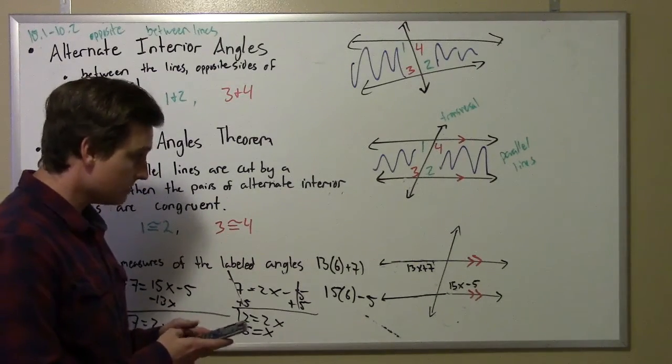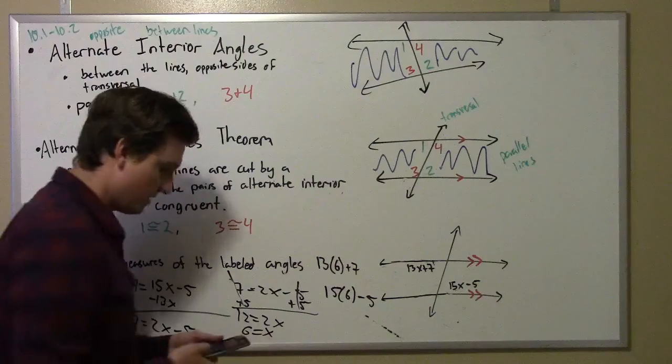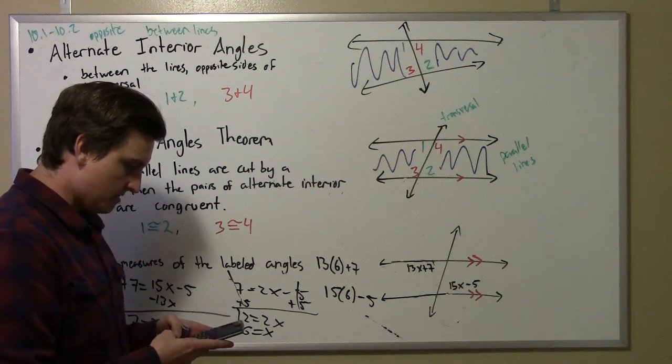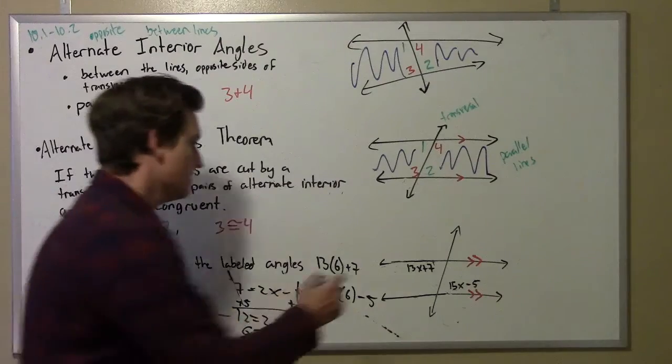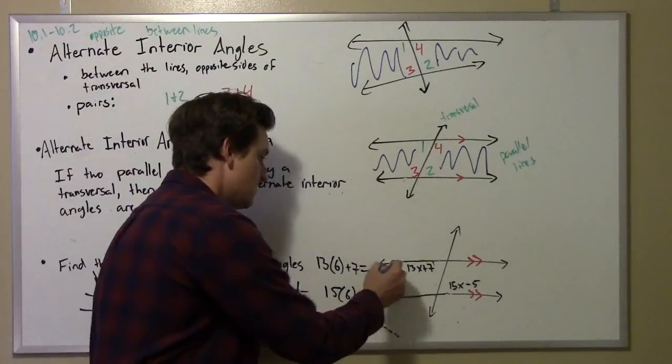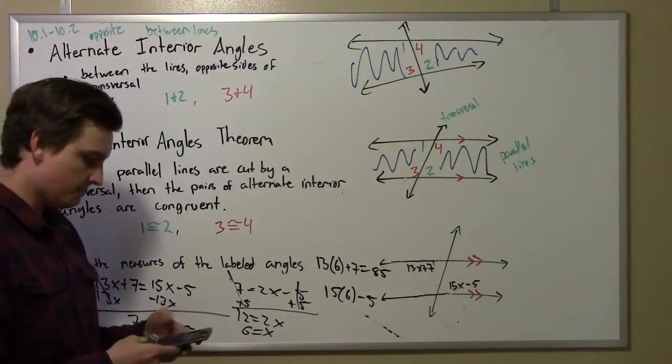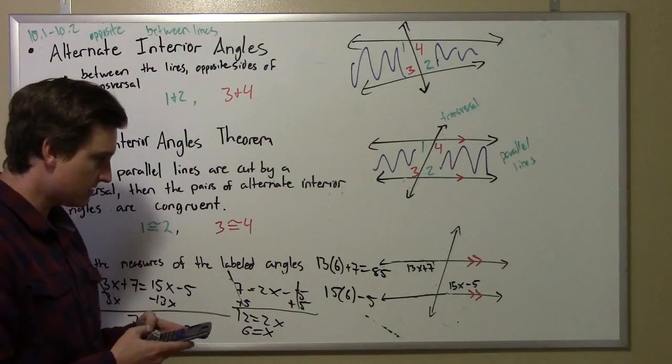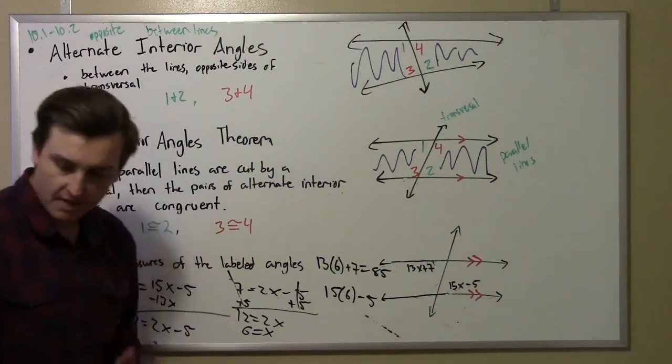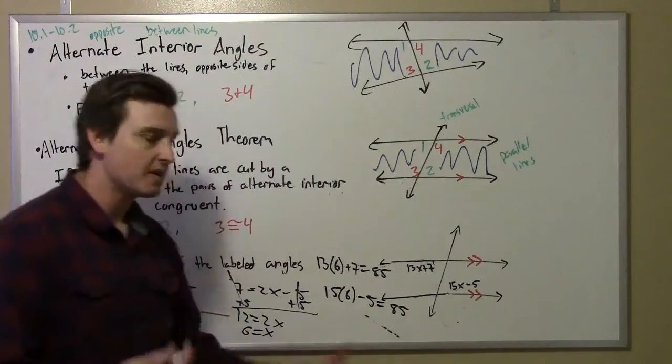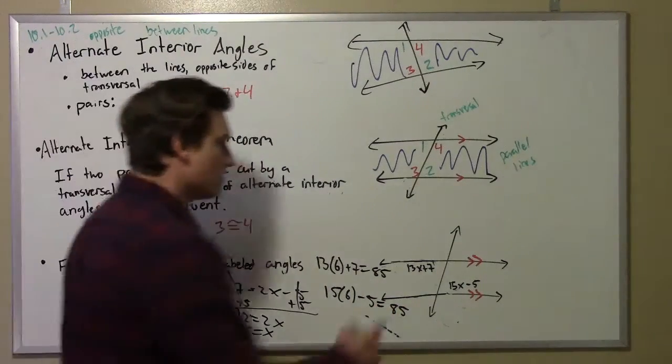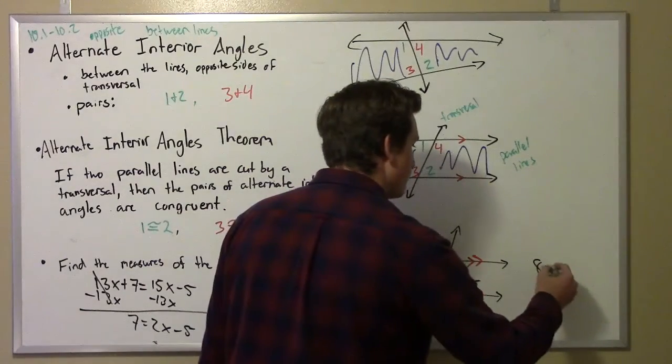13 times 6 plus 7 equals 85 for this top one. For the bottom, 15 times 6 is 90, subtract 5, and that's 85 as well. You really don't have to do it twice if you know they're congruent, but it's a good check. The measure of both angles is 85 degrees.